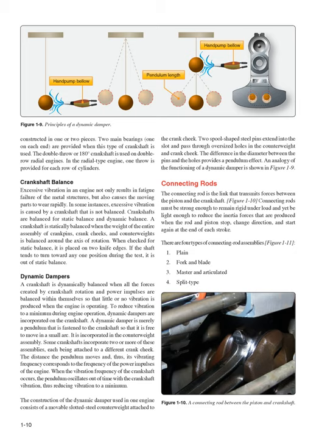The connecting rod is the link that transmits forces between the piston and the crankshaft. Connecting rods must be strong enough to remain rigid under load yet light enough to reduce the inertia forces produced when the rod and piston stop, change direction, and start again at the end of each stroke. There are four types of connecting rod assemblies: Plane, Fork and Blade, Master and Articulated, and Split Type.